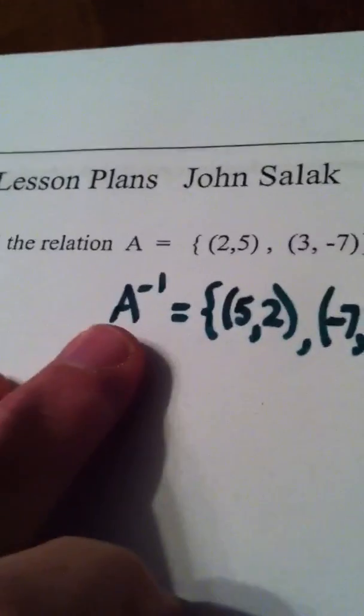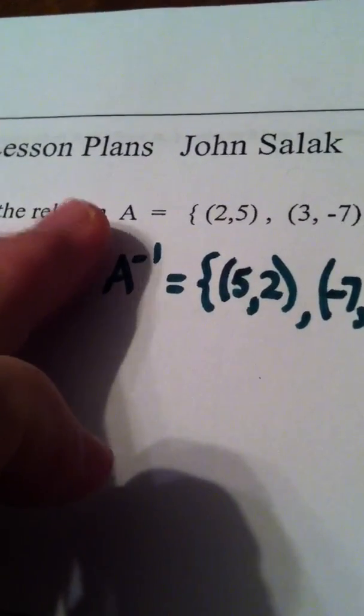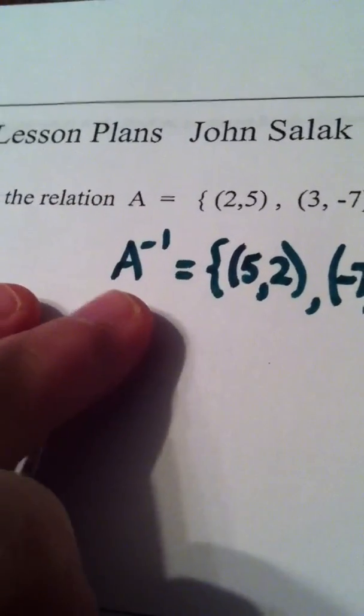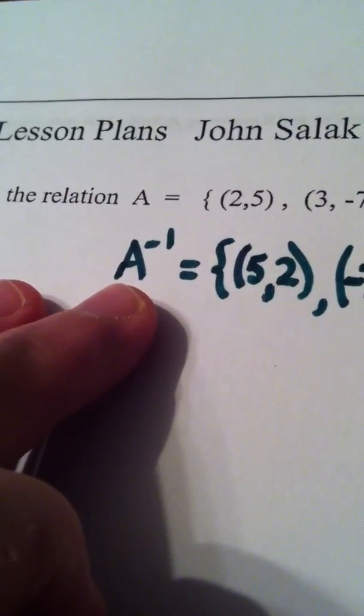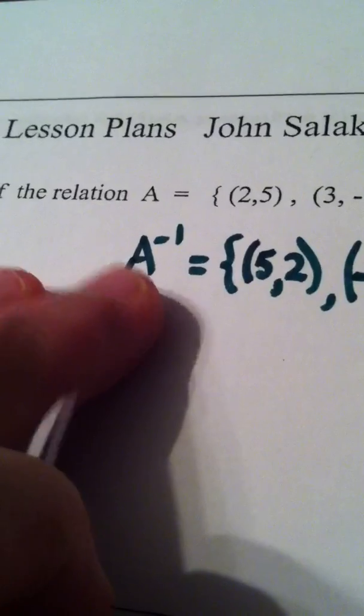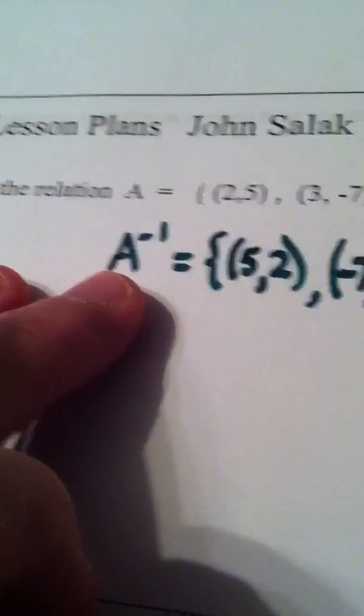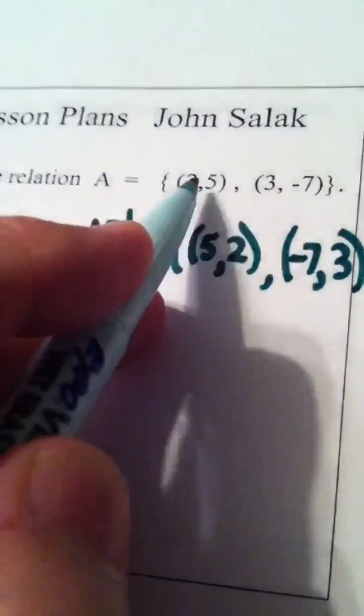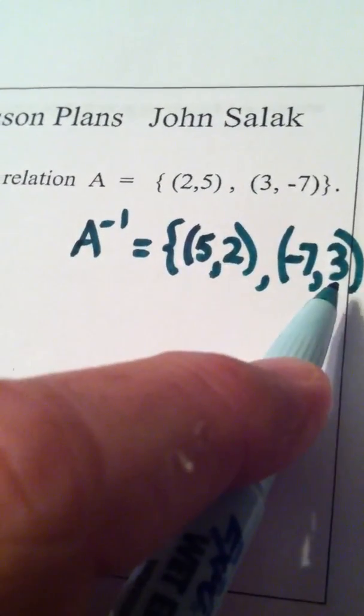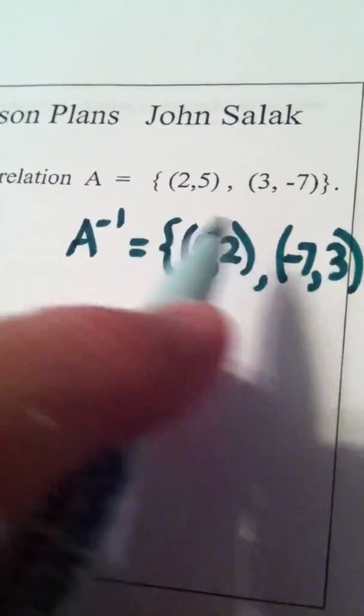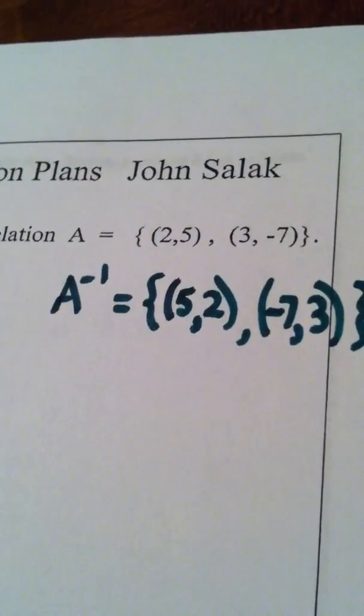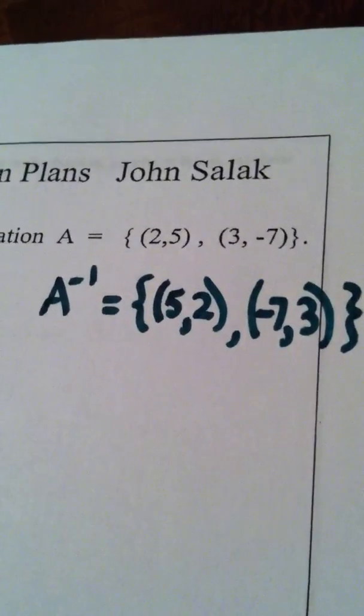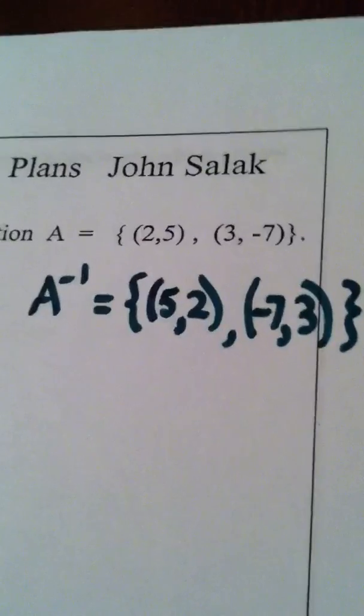So the way you write an inverse, if the original relation is called A, the way you write the inverse is A inverse by putting that negative one on top of the A, but it's called A inverse. And the way you form the inverse is you take every single ordered pair in it and you swap the X and Y. That's all you do. You don't take negatives, you just swap them.